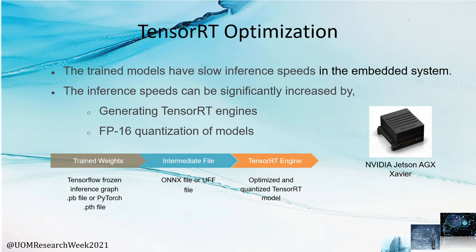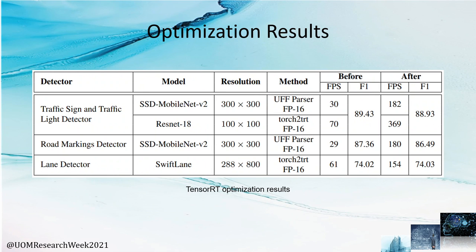All of the above models were trained on our workstation with GPU and had to be optimized for the embedded system for real-time inference. We used TensorRT optimization with floating-point 16 quantization, in which the trained models are converted to UFF or ONNX formats as intermediate files and then TensorRT engines are generated. As shown in the table, the inference speeds of these three detection models can be increased significantly using TensorRT optimization with a slight reduction in accuracy.